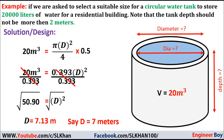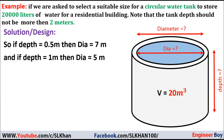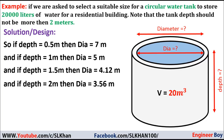Applying the same method for depth equals 1 meter, we get a diameter of 5 meters. For depth equals 1.5 meters, the diameter is 4.12 meters. And finally, for depth equals 2 meters, the diameter is 3.56 meters. We now have four trials to analyze.